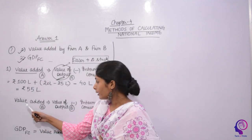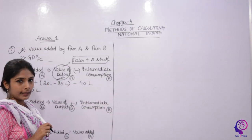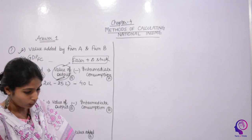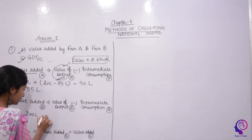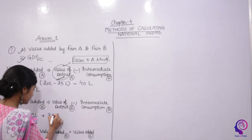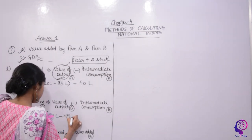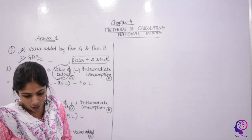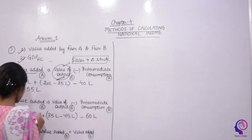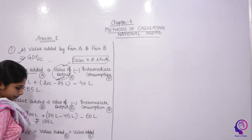Now for Firm B: Sales = 200 lakhs. Change in stock = Closing Stock of B (35 lakhs) minus Opening Stock of B (45 lakhs). Intermediate Consumption of Firm B = purchases from Firm A by Firm B = 60 lakhs. So Value Added by Firm B = 200 + (35 - 45) - 60 = 130 lakhs.